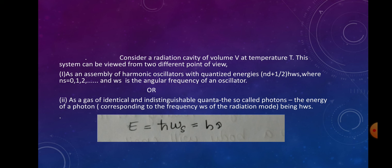When we study the thermodynamics of black body radiation, we consider the radiation cavity of volume V and temperature T. The first viewpoint treats it as an assembly of harmonic oscillators with quantized energies (n_s + 1/2)ℏω_s, where n_s = 0, 1, 2, etc., and ω_s is the angular frequency of an oscillator.